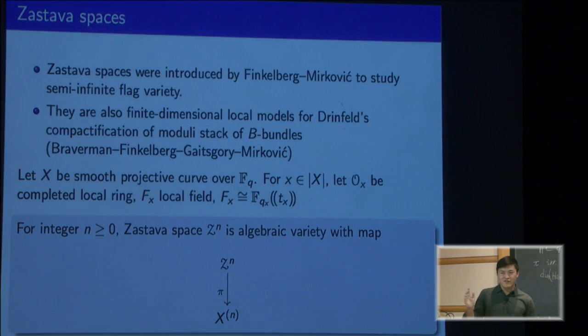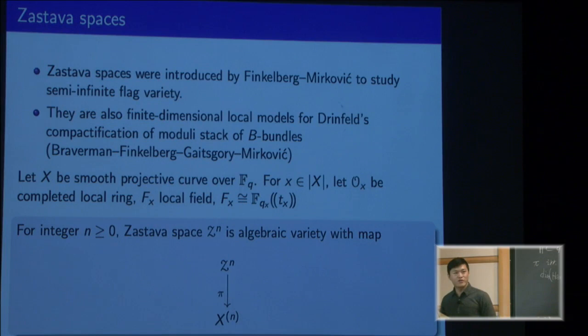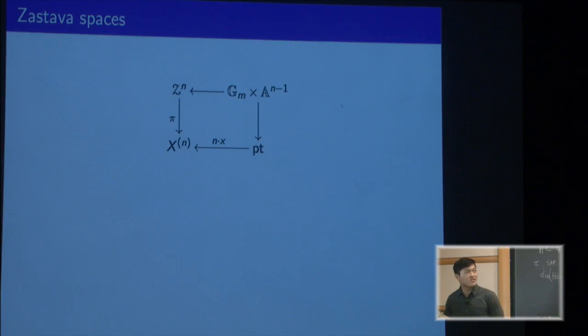In any kind of geometric representation theory, we always have some smooth projective curve over the finite field. For any point on this curve, we get an associated local field which can be identified with this field of Laurent polynomials. In this case, you get one for every positive integer, and it's just some finite dimensional algebraic variety with a map to the symmetric power of the curve.